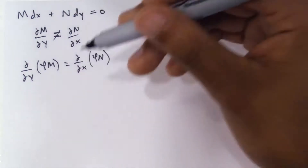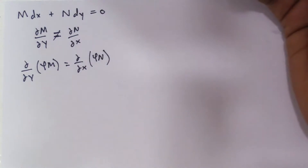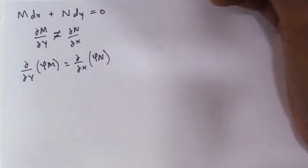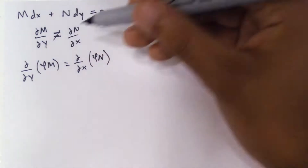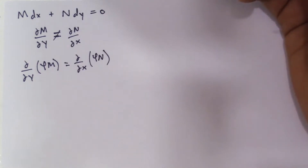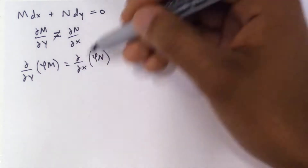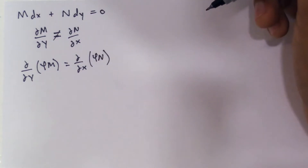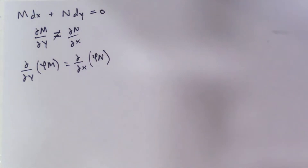I'm going to show you how to do it if phi is a function of x, but this is the same process if phi is a function of y. At the end I'll show you both equations, so if you just want to memorize them, that's fine. I'll go through the derivation so that if you forget the equation on a test, you can just do this method. It's very straightforward and logical, and you can solve for phi, find the integrating factor, and therefore solve the exact differential equation.